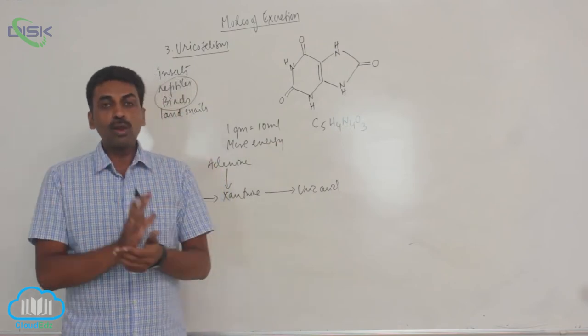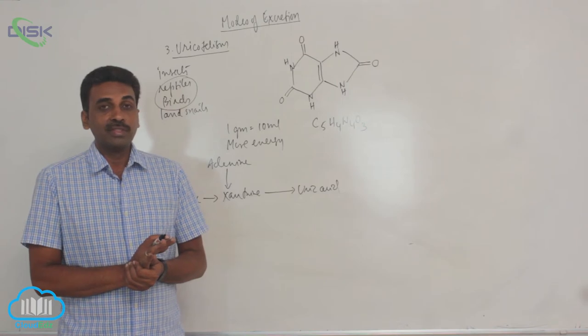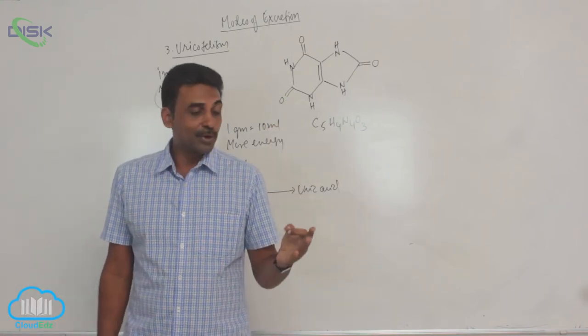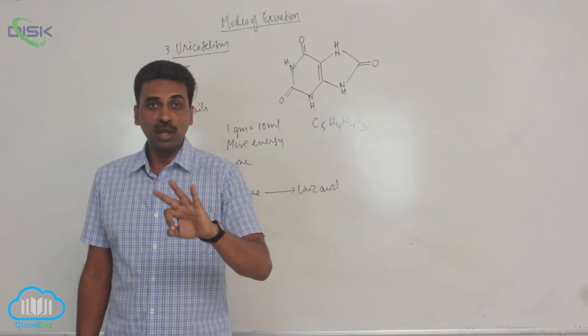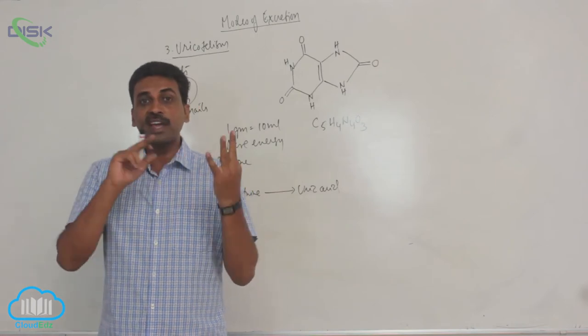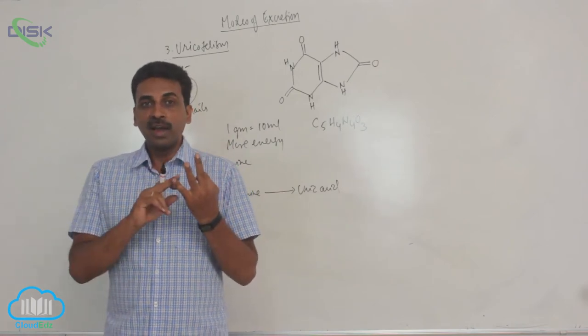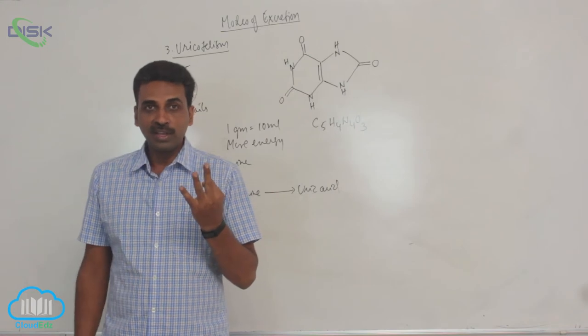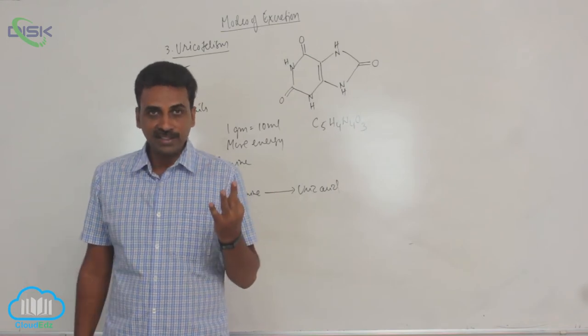So overall, if you observe the excretive products, we have got three types of excretive products. One is ammonia, other is urea, other is uric acid. Out of this, highly poisonous is ammonia. Least poisonous is uric acid.